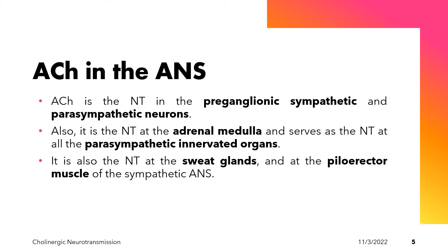Acetylcholine is also the neurotransmitter at the sweat glands and the piloerector muscle of the sympathetic autonomic nervous system. The sweat glands and piloerector muscle are considered to be exceptions because, although they are sympathetically innervated at the postganglionic neuron, their neuron will secrete acetylcholine instead of norepinephrine.